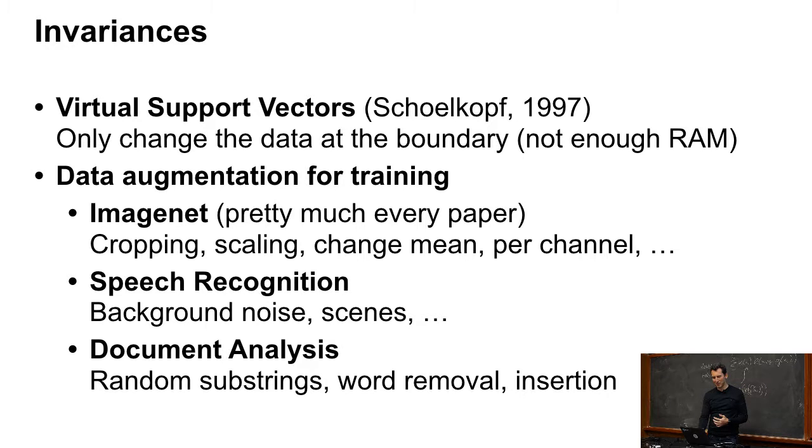This has been around for a long time. Basically, ImageNet, everybody does that. In speech recognition, people add background noise. They change scenes and other things to make it more resilient to augment the data. Document analysis, you might add or remove some words. And for instance, the virtual support vector machines, Bernard Schölkopf used it because he didn't have enough memory in his computer. So this was a specific funky way of how to augment the data set there.